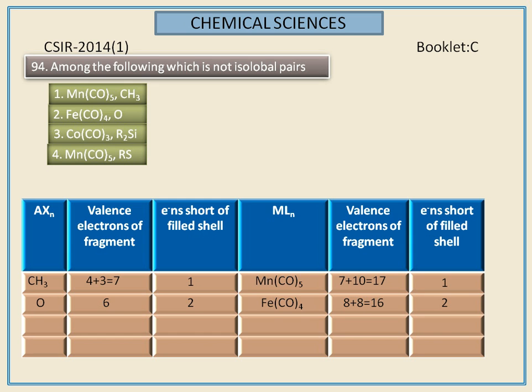Next, we calculate for tricarbonyl cobalt and dialkyl selene. Dialkyl selene has 6 valence electrons. For tricarbonyl cobalt, the number of valence electrons is 15. For dialkyl selene, it requires only 2 electrons to get the stable configuration, but in the case of tricarbonyl cobalt, it requires 3 electrons to get the stable configuration.